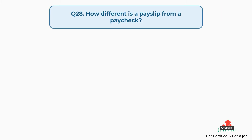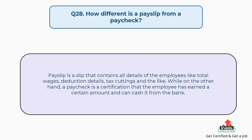Question number twenty-eight: How different is a payslip from a paycheck? The answer is, a payslip is a slip that contains all details of the employee like total wages, deduction details, tax cuttings and the like. While on the other hand, a paycheck is a certification that the employee has earned a certain amount and can cash it from the bank.